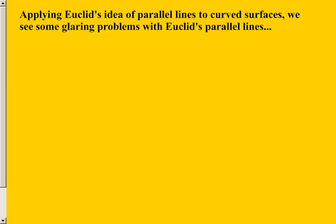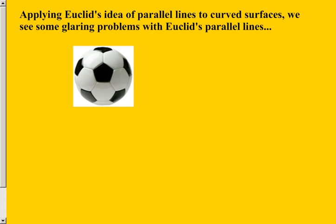So applying Euclid's idea of parallel lines to curved surfaces, we see some glaring problems with Euclid's parallel lines. We're going to look at a couple of curved surfaces, one of them being the sphere. And of course, we have a lot of examples of spheres in the world. Here we go. Soccer ball. I love soccer. So that's my example that I chose. And they have the topic of spherical geometry, meaning the subjects that we study and the topics that we study can actually apply, not necessarily to just a flat surface, but a curved surface. And that's going to cause some problems.